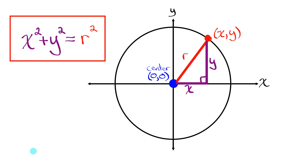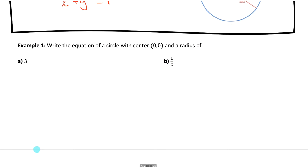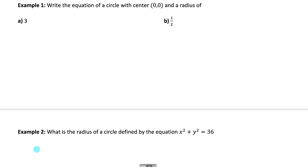So x squared plus y squared equals r squared, and that relationship holds true for any XY point on the circumference of the circle centered at the origin. Hopefully now you can understand where this equation of a circle comes from. Let's practice writing the equation of a circle.